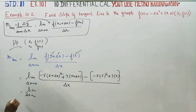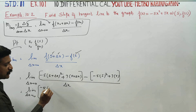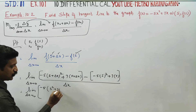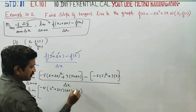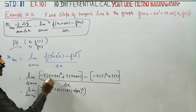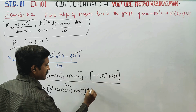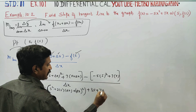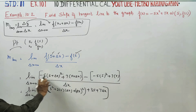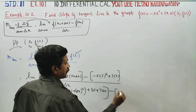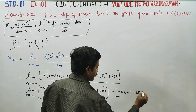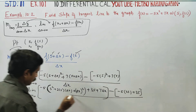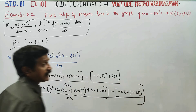Limit as delta x turns to 0. What is a plus b whole square? a² plus 2ab plus b² — that is the a plus b whole square formula. 7 times 5 is 35, plus 7 times delta x. Minus, minus 5. 5 squared is 25. 7 times 5 is 35. All divided by delta x.